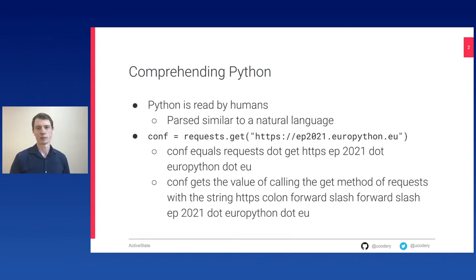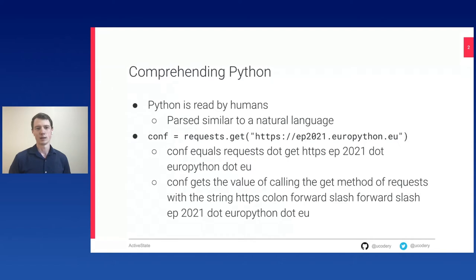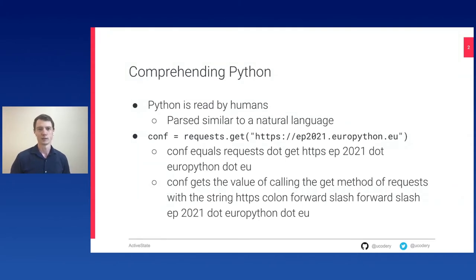For instance, this line of code I would probably read out loud as 'comp equals requests dot get https bp2021.europython.eu.' When I read that line of code out, most of you probably understand exactly what I'm trying to do, which is pretty great because I left out some very crucial pieces of information that a computer might want to know. I didn't tell you actually all the characters that were in the string, that there was a string, where the string started or ended, or that it was an argument or that I was even doing a method call. You all just kind of inferred that, which is great, but the computer doesn't infer that.